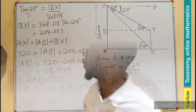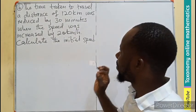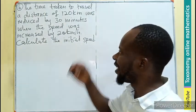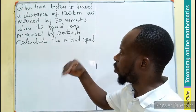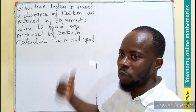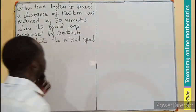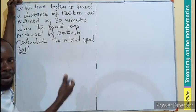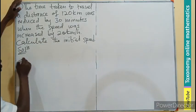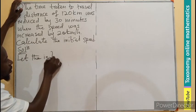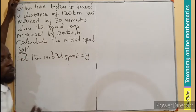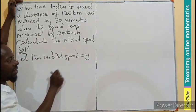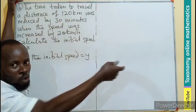Question B: The time taken to travel a distance of 120 kilometers was reduced by 30 minutes when the speed was increased by 20 kilometers per hour. We need to calculate the initial speed. Let the initial speed be Y. When the speed is increased by 20, the new speed is Y plus 20. The distance in this calculation remains 120 kilometers.